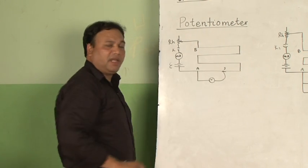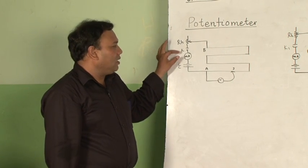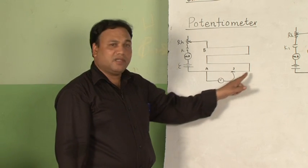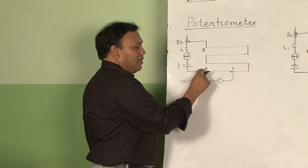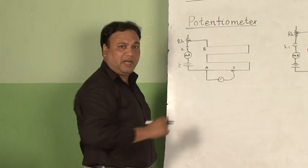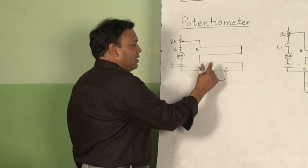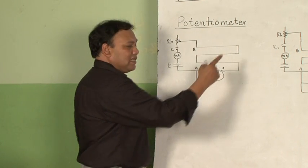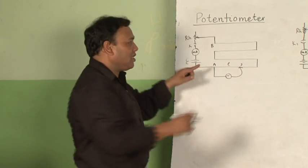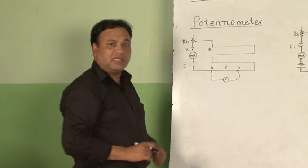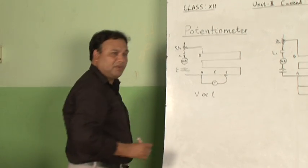A constant current is flowing through the wire A to B — fix this current at say 50, 60, or 70 milliamperes, so a steady current flows through the potentiometer wire. If I connect the voltmeter's positive terminal at A and slide the other end along the wire with the jockey, as the length of portion AJ increases, the resistance of that portion also increases, and as a result the potential difference between those two points also increases. This means length L and potential difference are directly proportional to each other.